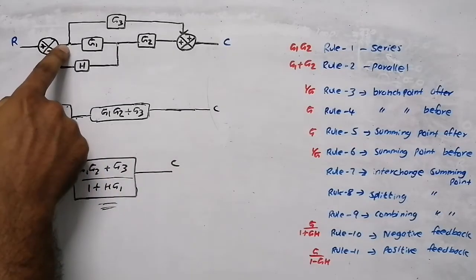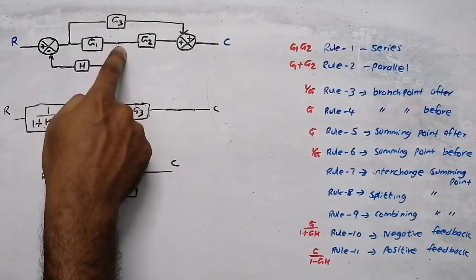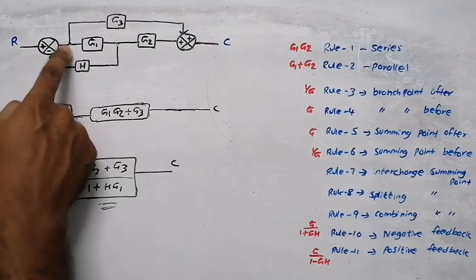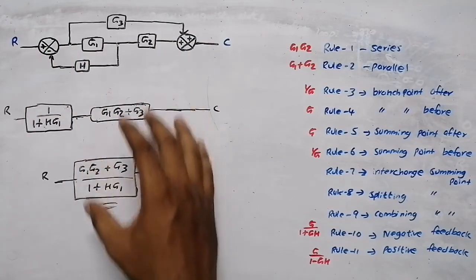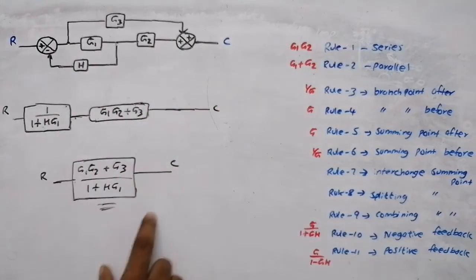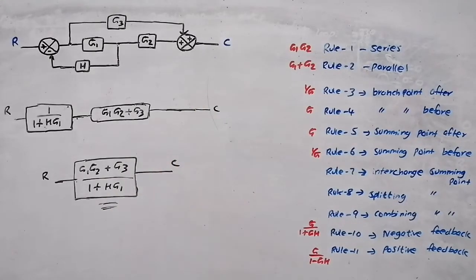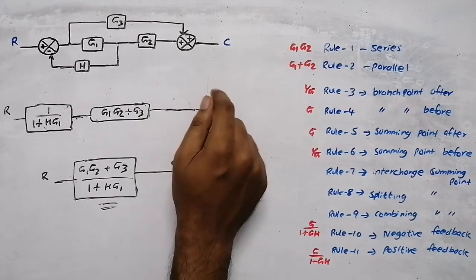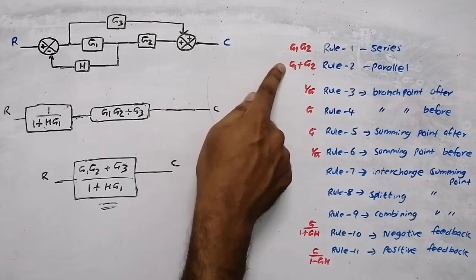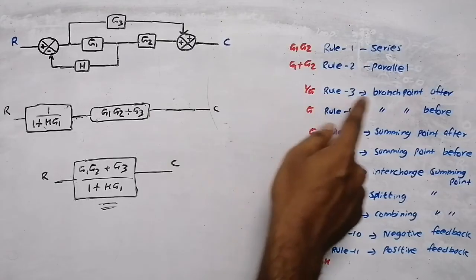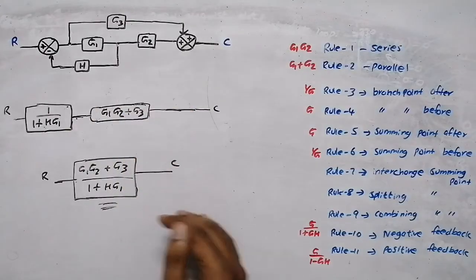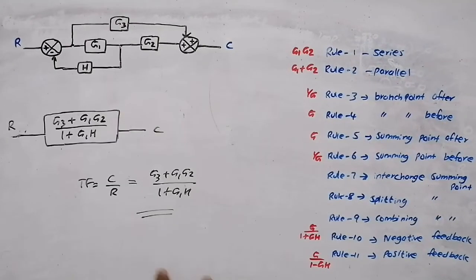When blocks are in series, just multiply them. In this case also we are getting the same final answer. So you can use any method — move this branch point here, or move that branch point there — you will get the same answer if the steps are correct. First check for series or parallel elements; if none, then apply the branch point rule. In the next video we'll do a more complicated question.